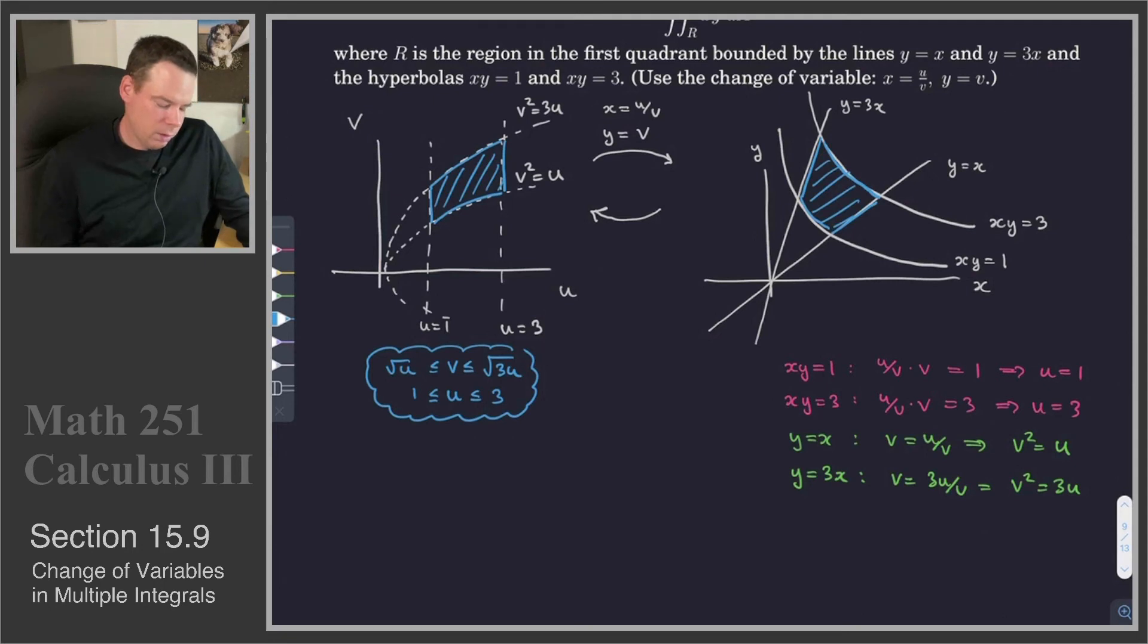Last thing we need is the Jacobian. That's the final ingredient before we can go ahead and do our change of variables. So, what's our Jacobian? It's going to be dxy, duv. And so, that's the determinant of x sub u, x sub v, y sub u, y sub v.